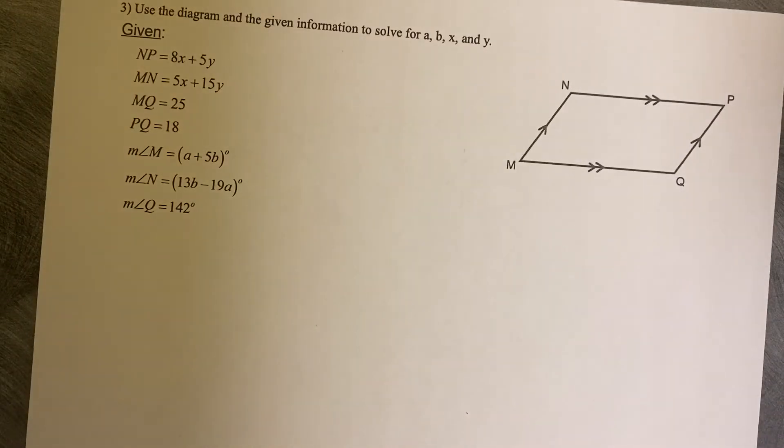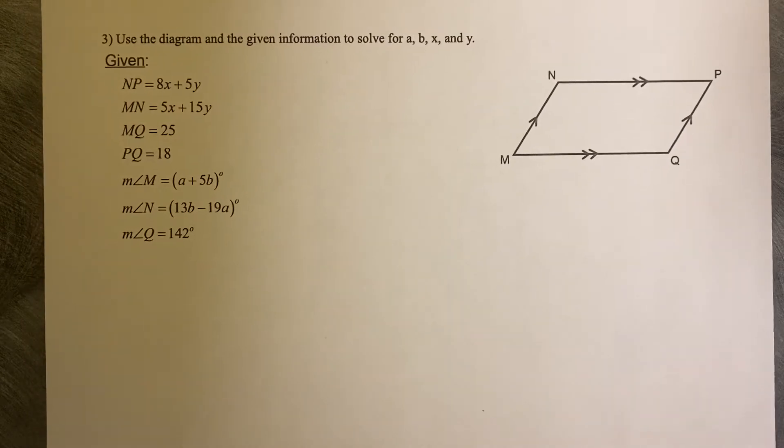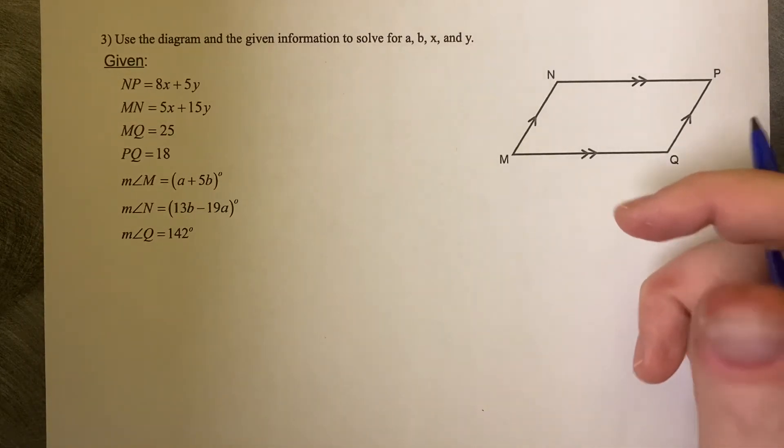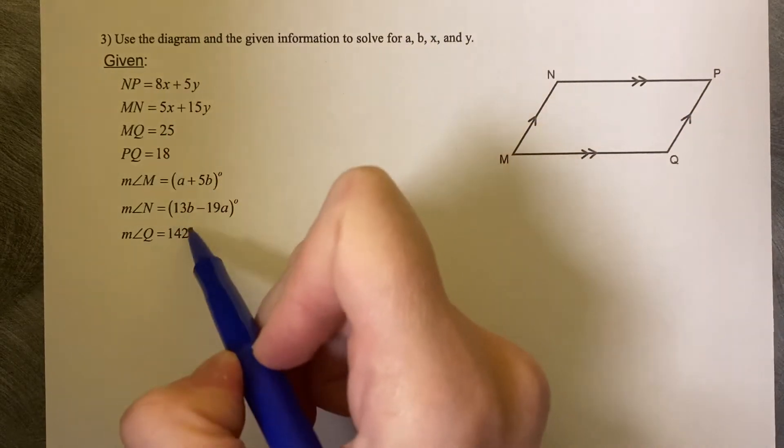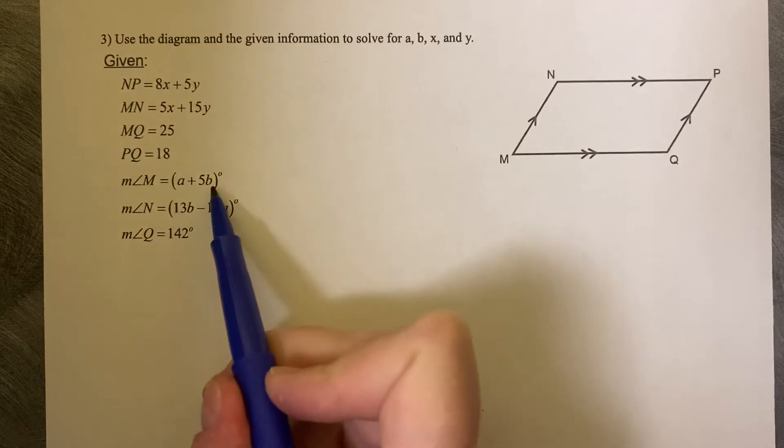Let's take a look at another parallelogram example. Use the diagram and the given information to solve for A, B, X, and Y. A, B, X, and Y are all in here. So X, Y, A, B.